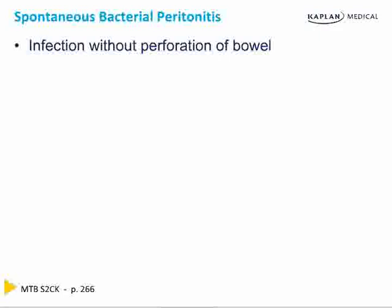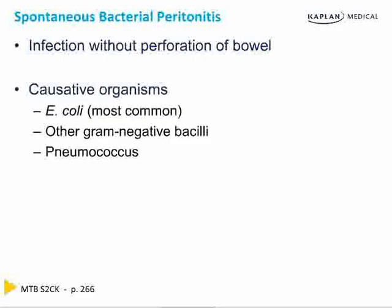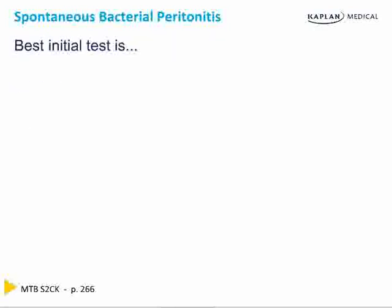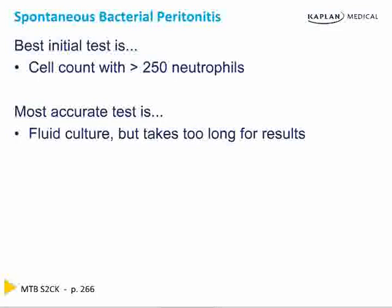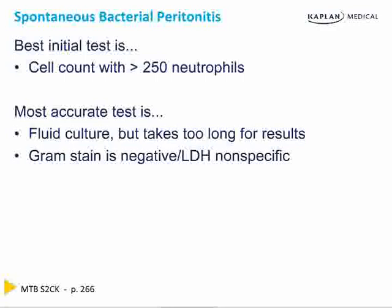Spontaneous bacterial peritonitis is an infection of the abdomen without perforation of the bowel. The organisms that cause it are E. coli being the most common, other gram-negative bacilli, pneumococcus, and anaerobes which are rare. The best initial test is a cell count of the fluid showing greater than 250 neutrophils. The most accurate test is a fluid culture, but we don't wait for it because it takes too long. Gram stains are sometimes negative, and LDH is nonspecific.